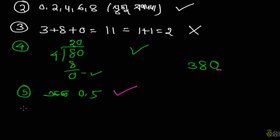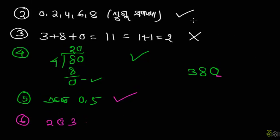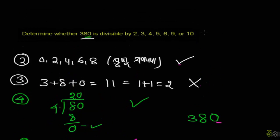Next is 6. For divisibility by 6, the number must be divisible by both 2 and 3. Since 380 is divisible by 2 but not 3, it's not divisible by 6.